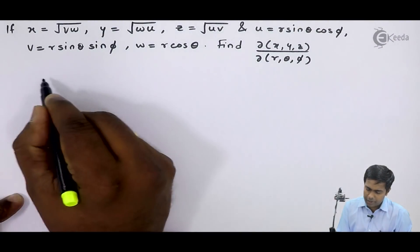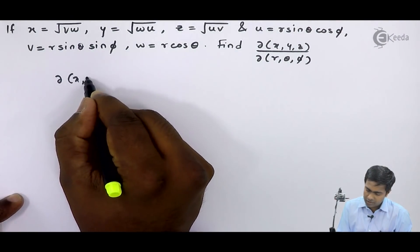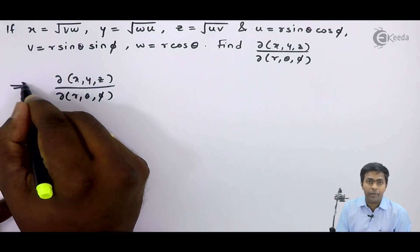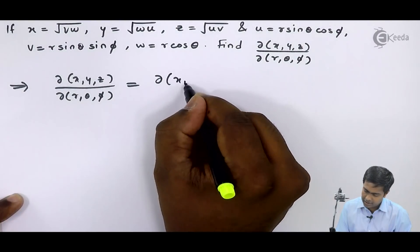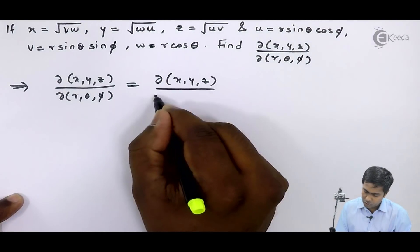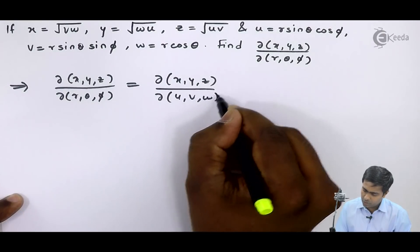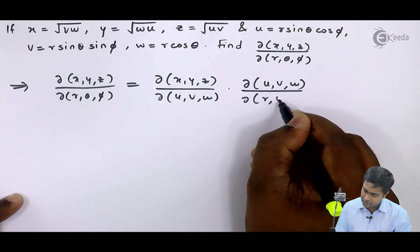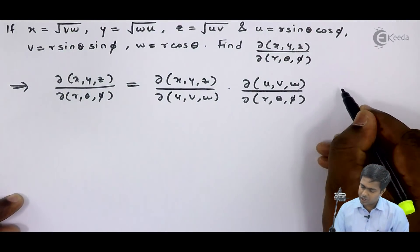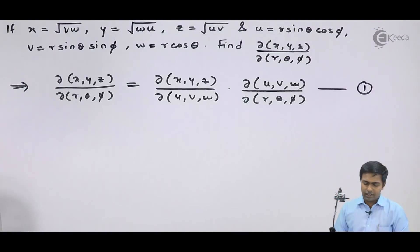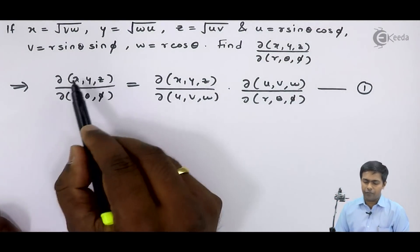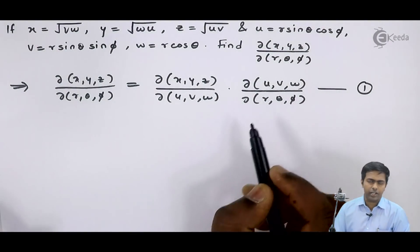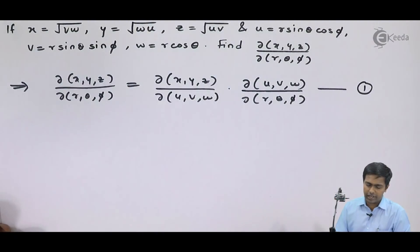To find the Jacobian of x, y, z with respect to r, theta and phi, the formula gives: J(x,y,z / r,θ,φ) = J(x,y,z / u,v,w) × J(u,v,w / r,θ,φ). I will call this equation number one. To get the value of the left-hand side, I will first find the values of these two Jacobian terms and substitute them into equation one to get the final answer.